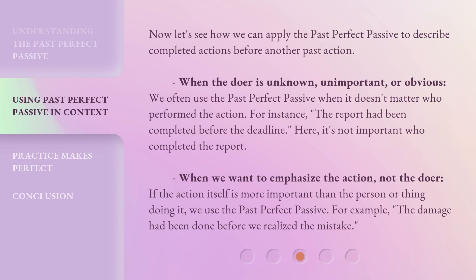Now let's see how we can apply the past perfect passive to describe completed actions before another past action. When the doer is unknown, unimportant, or obvious, we often use the past perfect passive when it doesn't matter who performed the action. For instance: 'The report had been completed before the deadline.' Here, it's not important who completed the report. When we want to emphasize the action, not the doer — if the action itself is more important than the person doing it, we use the past perfect passive. For example: 'The damage had been done before we realized the mistake.'